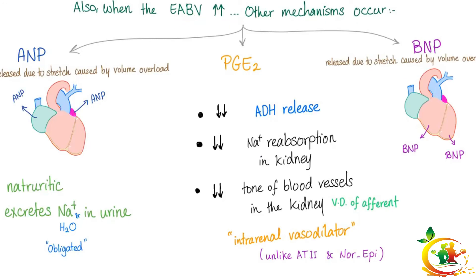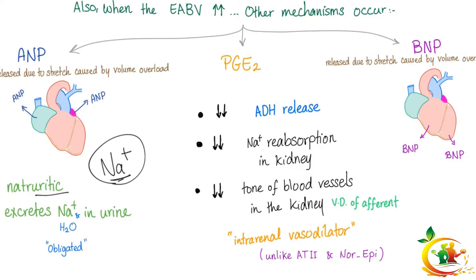When effective arterial blood volume is high, additional mechanisms activate: atrial natriuretic peptide (ANP), brain natriuretic peptide (BNP), and prostaglandin-A2. ANP is released due to stretch of the atrium caused by volume overload — when both atria are stretched, they secrete ANP. 'Atrial' because it comes from the atria; 'natriuretic' because natrium means sodium (Na) and 'uretic' means excretion in urine. ANP excretes sodium in the urine, and obligated water follows.